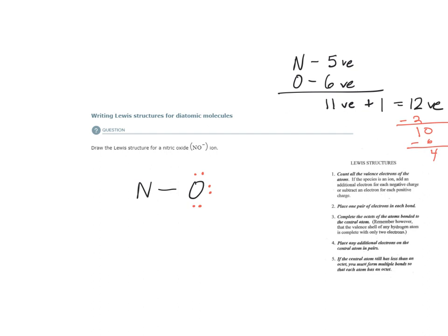Let's see if we can place them here. Two, four. Let's see if the octet of nitrogen is satisfied: one, two, three, four, five, six. Nitrogen does not have an octet.